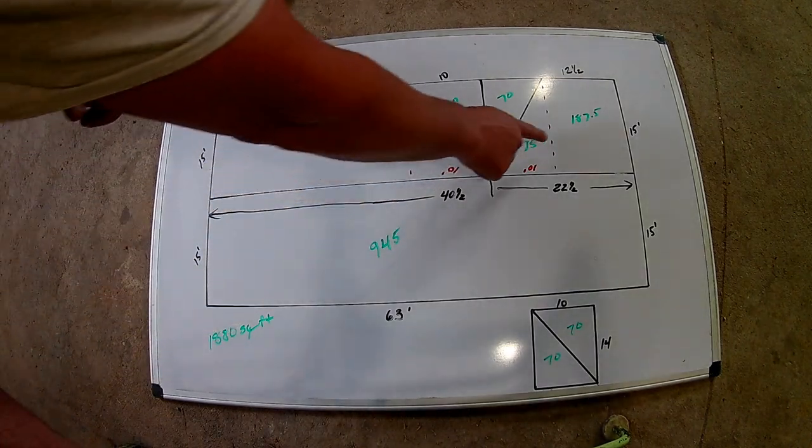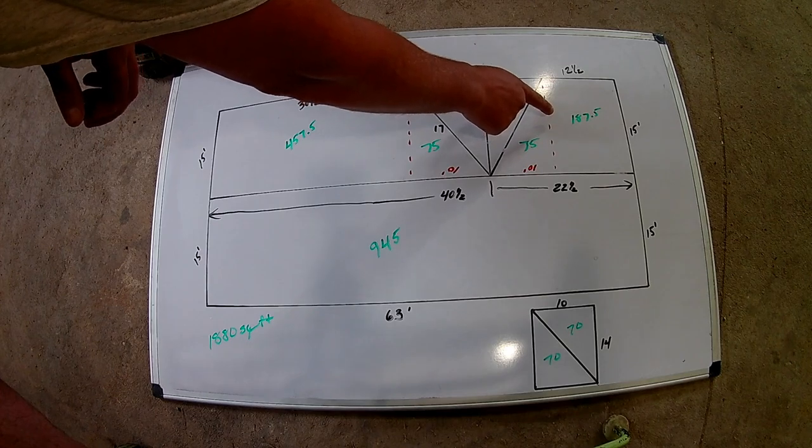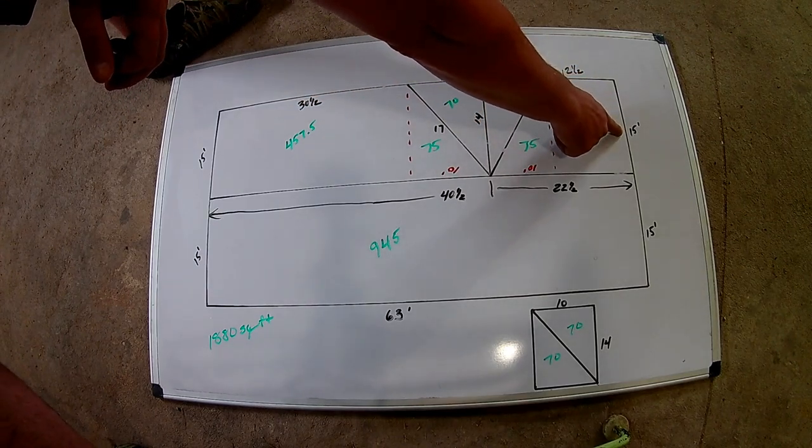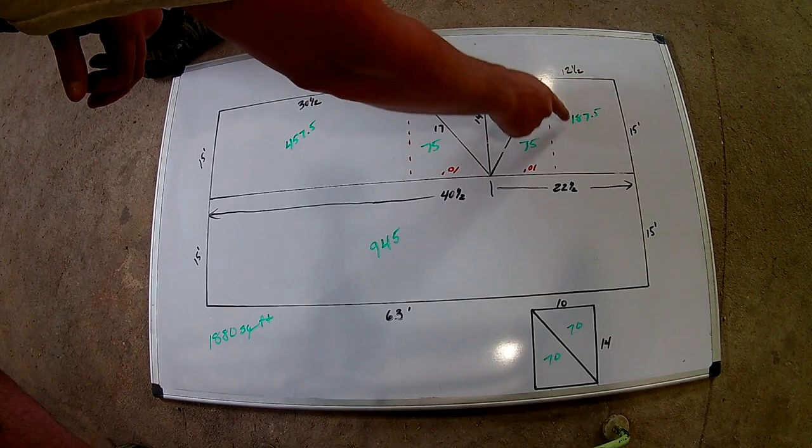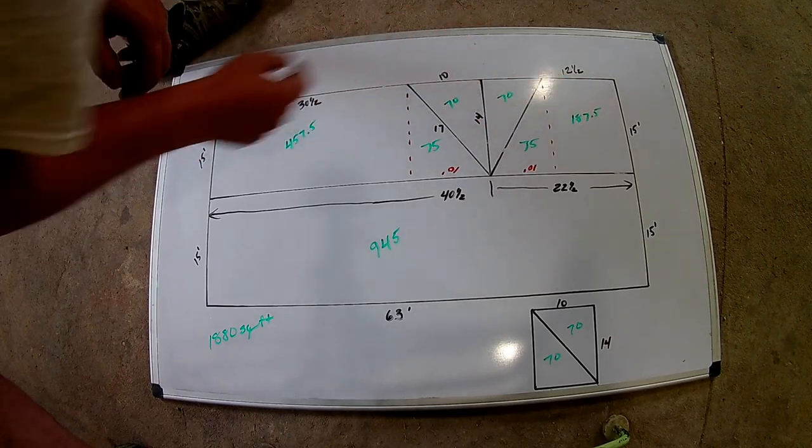And I did the exact same thing over here. I did 12 and a half by 15, multiply that, you're going to have 187.5.